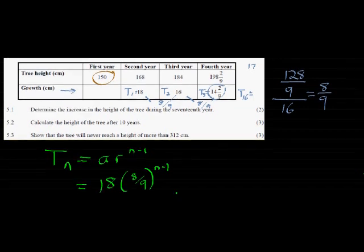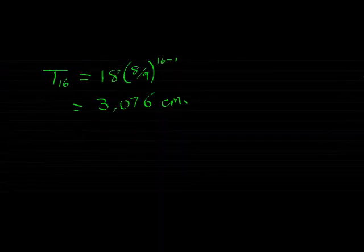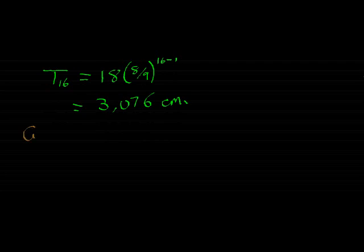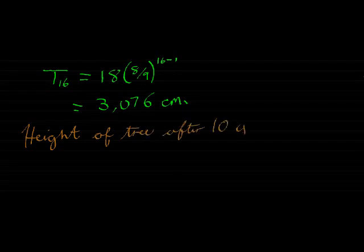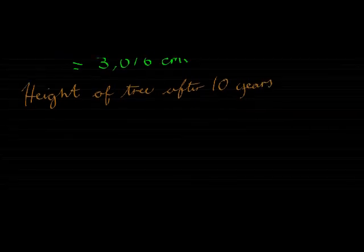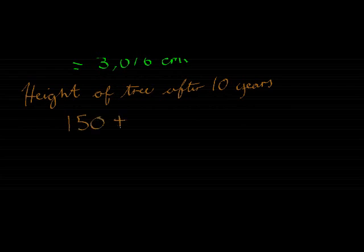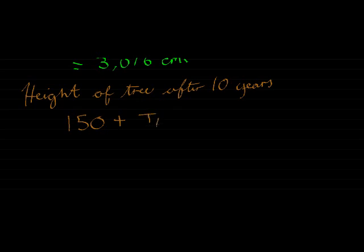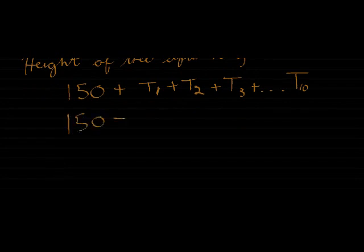So in other words, we must add the first year of growth, the second year of growth, the third year of growth, et cetera. So the height of the tree after 10 years is obviously the first 150 plus its growth for 10 years. And I don't go and just add the tenth year's growth. I must add the first year's growth plus the second. T1 is the second year's growth, T2 is the third year's growth, T3 is the fourth year's growth. So I'm going to do this all the way up to T10, which means I've actually got my first year's growth plus 10 years of added growth. If I sum them all together, it's S10.